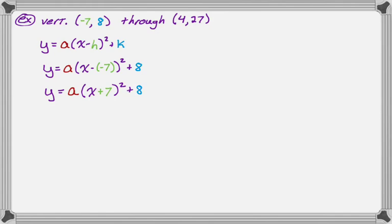Now at this point, we need to solve for a, so we look up and we know 4, 27 is the ordered pair we're going to use. So we're going to substitute 4 in for x, and we're going to substitute 27 in for y. So it's 27 is a, 4 plus 7, quantity squared, and then plus 8. 4 plus 7 is 11.